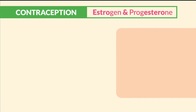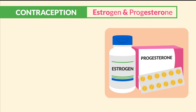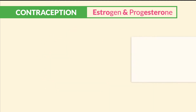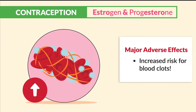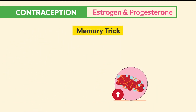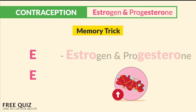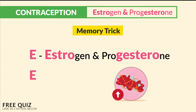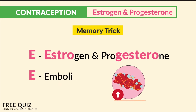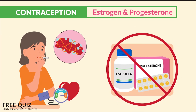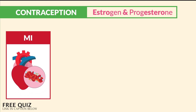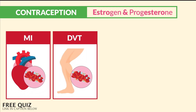Alright guys, let's begin! We have contraception, which involves estrogen and progesterone — our typical oral birth controls that everyone takes to prevent pregnancy. The major adverse effect is an increased risk for blood clots. The memory trick we use is the double E's: estrogen and progesterone, then E for emboli, since there's a big risk for embolic events. That's why it's not given to patients who are at high risk for clots or have a history of clots, like someone with an MI or heart attack, a clot in the heart, or a DVT — a clot in the leg.